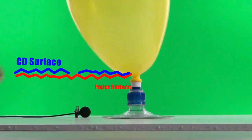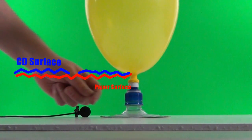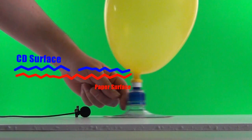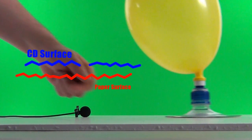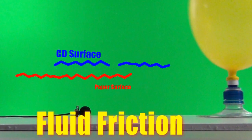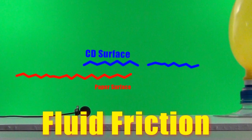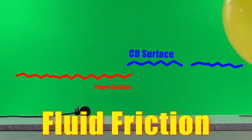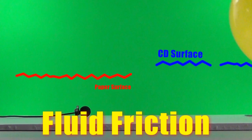But when air is passing between the balloon and the table those ridges are no longer touching each other. And the resisting force of fluid friction, sometimes called air friction, is much less than the static friction, allowing the CD hovercraft to move.